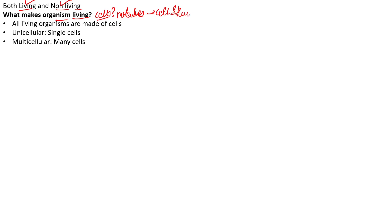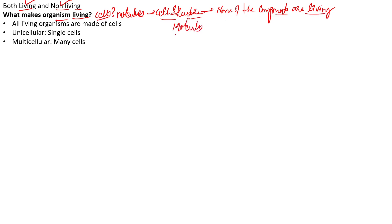If you look into the cell structure, inside the cell none of the components are actually living — which means that no component inside the cell is actually living. All of them are actually biomolecules — they are basically chemicals. Then how do these chemicals keep us living?